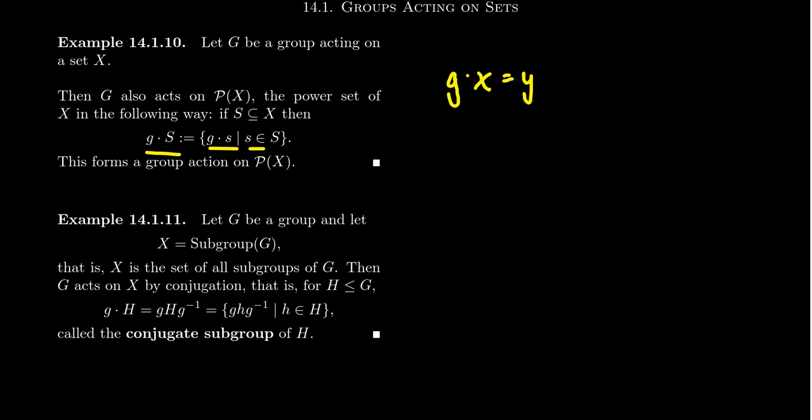We also have to show compatibility. That if we have two group elements G and H, if you act on the set first by H, then by G, that's the same thing as acting by the element G times H. And these two axioms are inherited from the axioms that X is a G set.